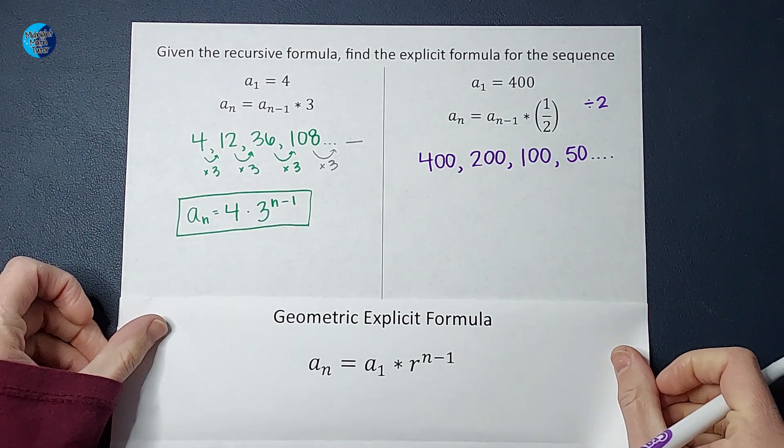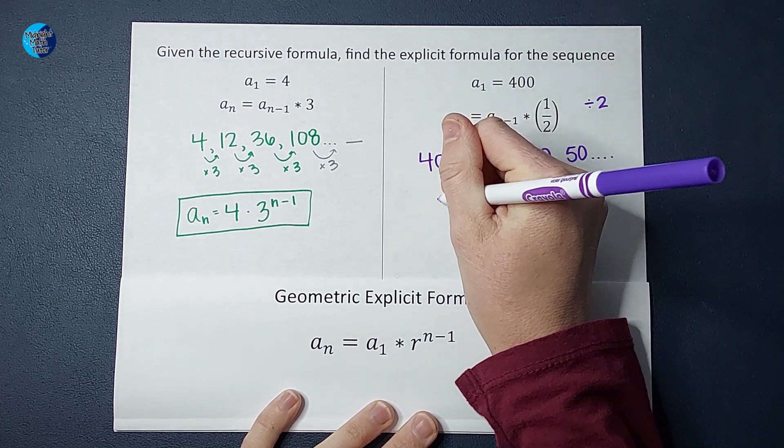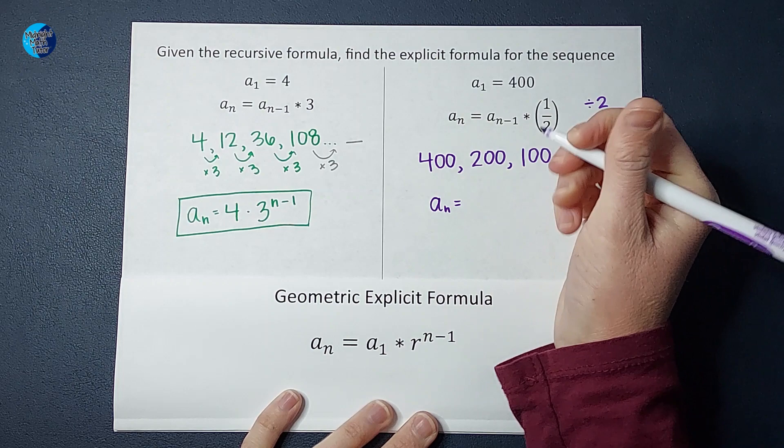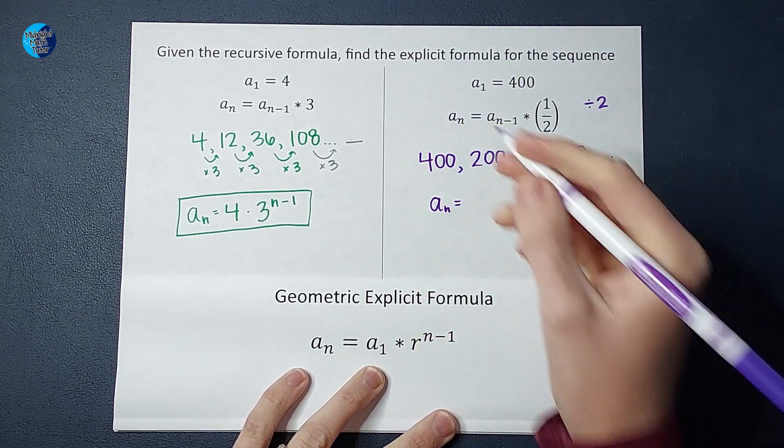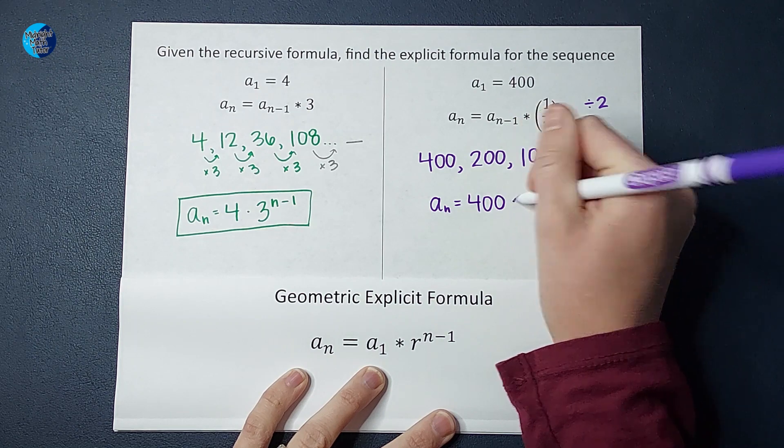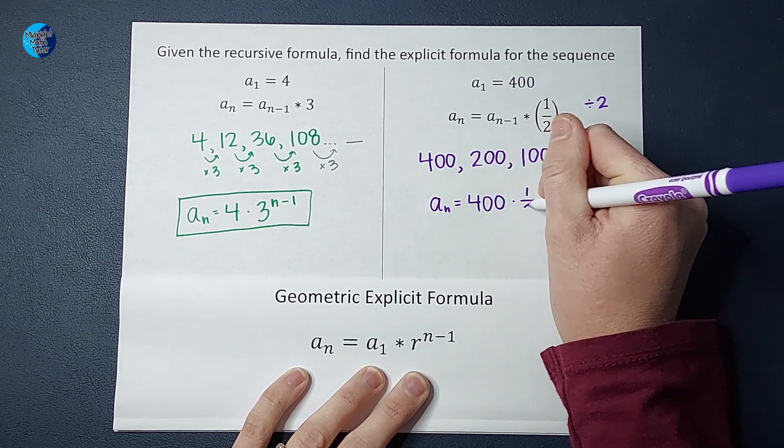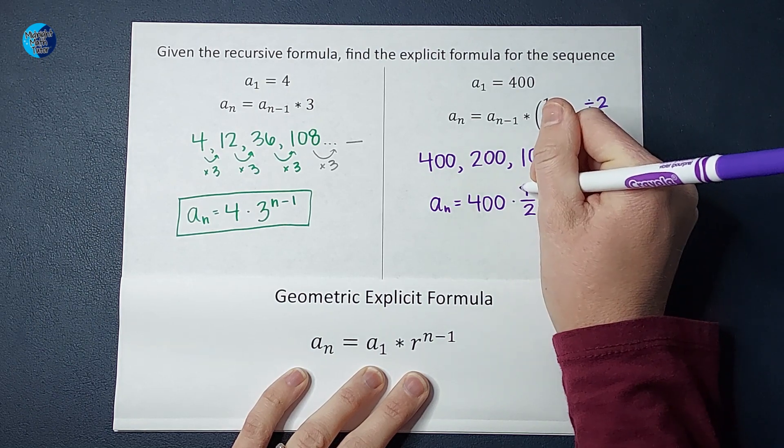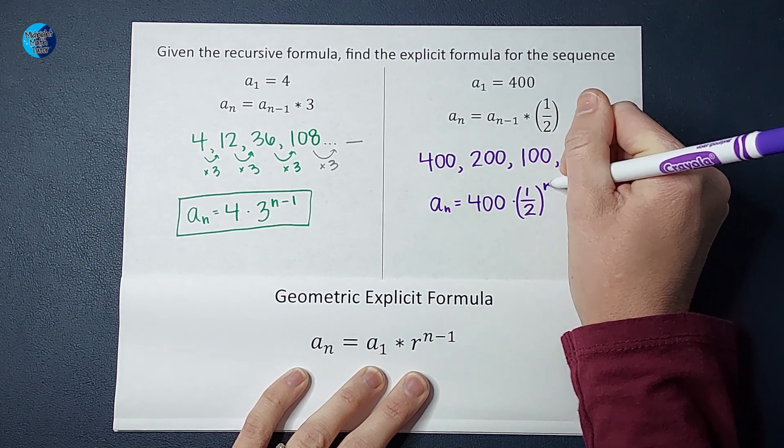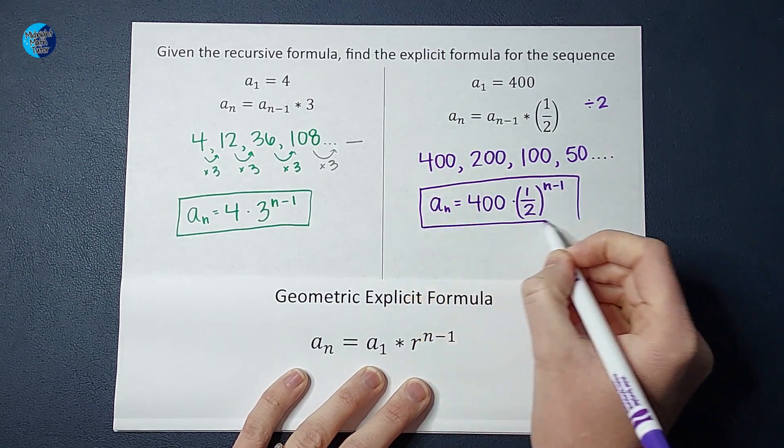Let's go ahead and plug into our explicit formula. So whatever number we want to find a sub n, take a sub 1, the first term, 400, multiply it by our common ratio, which is one half, to the power of n minus one. There is my formula.